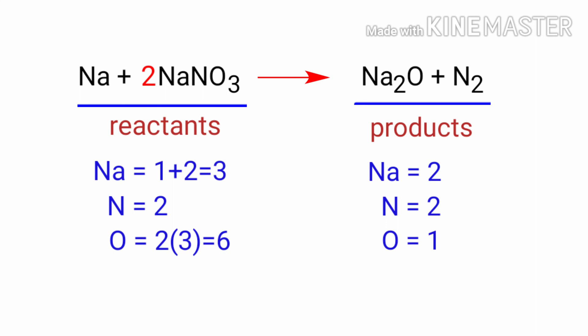Now we need to balance the oxygen atoms. To do this, we need to put a coefficient of 6 in front of Na₂O. The oxygen atoms are balanced.